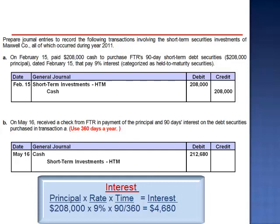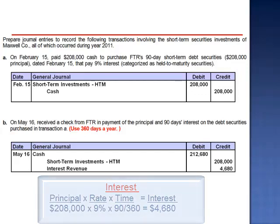Credit the short-term investments held to maturity for the principal amount, $208,000, and credit interest revenue, $4,680.